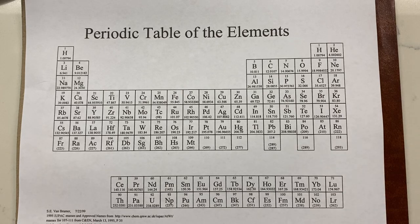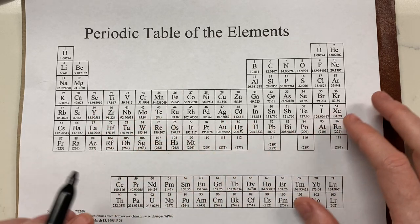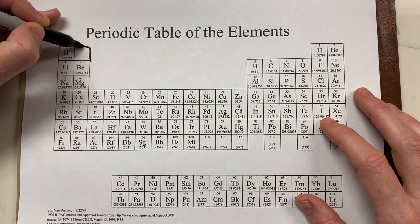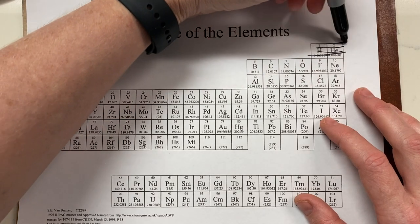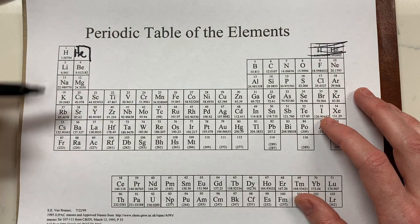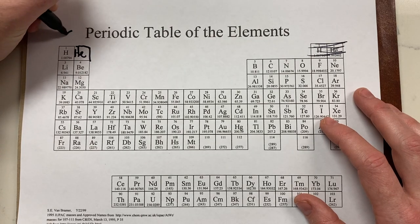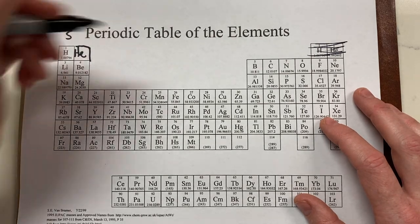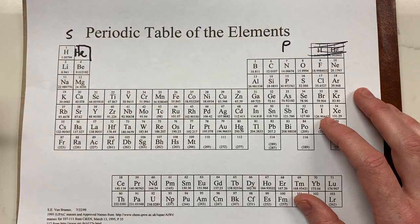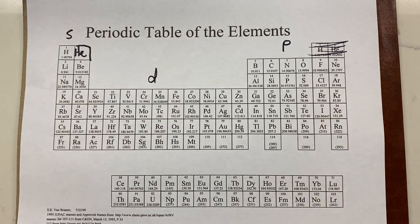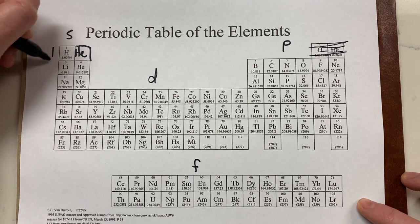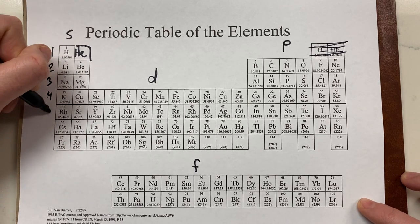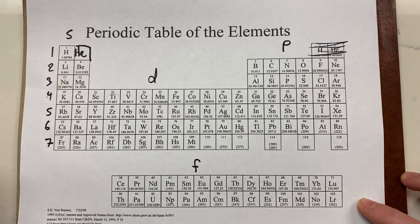Let's go through how we prepare our periodic table. The first step is I like to move helium over here, and then I get rid of the gap, because these elements belong in the S block. Now let's label our blocks: this is S, over here is P, this is D, and down here is F. Then we label the rows, starting with S: 1, 2, 3, 4, 5, 6, 7.